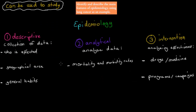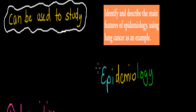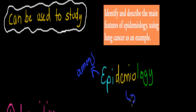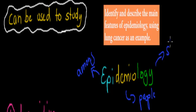So quickly, what does epidemiology actually mean? There are three parts to this word. 'Epi' means among. 'Demio' comes from demographics — it means people. And 'logy' means study. So what epidemiology actually is, is the study of health problems among people.